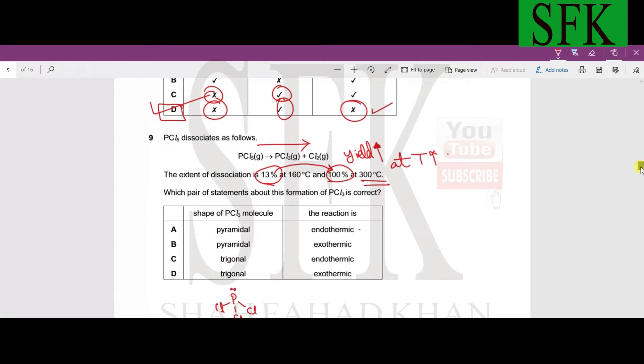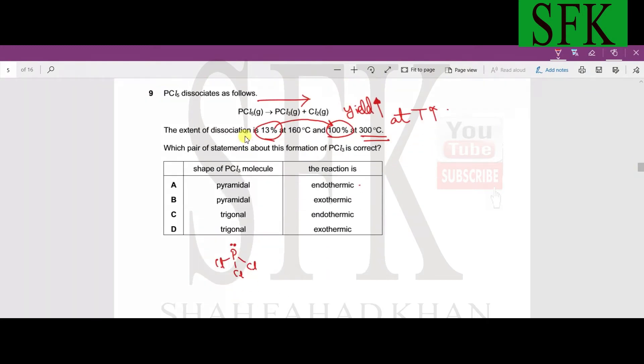Moving on to question number nine. PCl5 forms PCl3 and chlorine. The extent of dissociation is 13 percent at 160 but if the temperature is raised to 300 it reaches up to 100. This means the yield is actually increasing when the temperature is increasing, so this suggests that it is an endothermic reaction because increasing temperature actually favors the reaction in that direction.